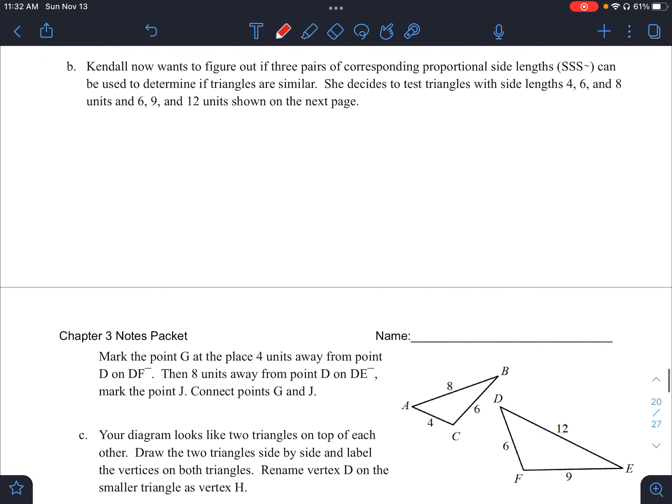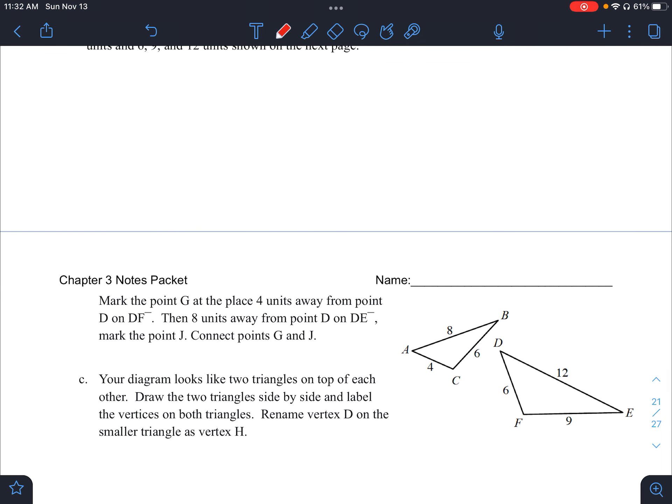So in letter B, it says Kendall now wants to figure out if three pairs of corresponding proportional side lengths or side side side similarity can be used to determine if triangles are similar. She decides to test triangles with side lengths four, six, and eight, and six, nine, and 12. And this is shown here down here. So we got kind of a weird break here, but we'll be all right. So it says mark the point G at the place four units away from the point D on DF.